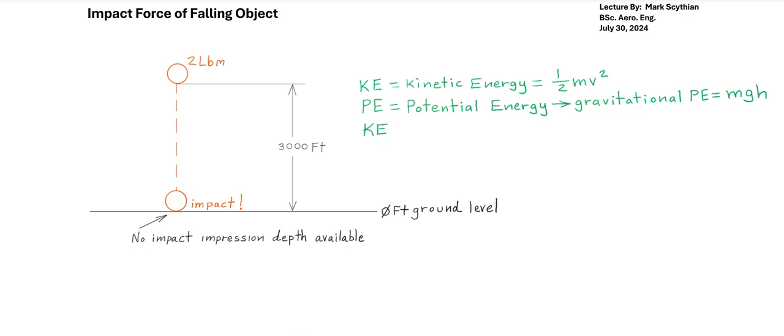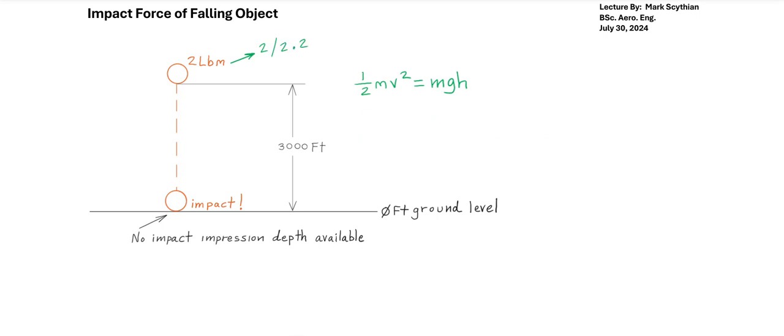We know that kinetic energy is equal to potential energy because energy is conserved. So we can simply equate one-half mv squared kinetic energy to gravitational potential energy mgh.